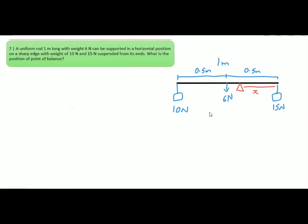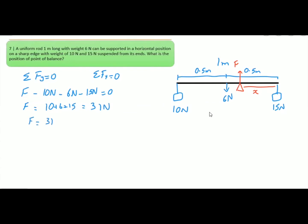Let the sharp edge be at distance x from one end. Using the first condition of equilibrium (ΣFy = 0): F − 10 − 6 − 15 = 0, so the force on the sharp edge F = 31 N upward. Now using the second condition of equilibrium: the sum of all torques must equal zero, i.e., clockwise torque equals anticlockwise torque.